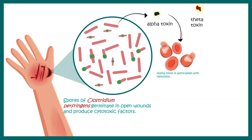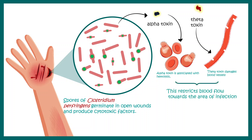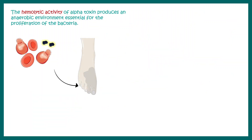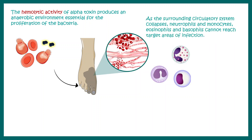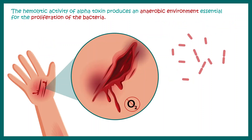Alpha-toxin has hemolytic activity — that means it can rupture RBCs — and theta-toxin can damage the blood vessels. All these things lead to a reduction in blood flow to the infection site. When blood flow is reduced, the immune cells are not able to reach that infection site and cannot combat the pathogens. In other words, immune effectiveness is reduced by damaging the highways.